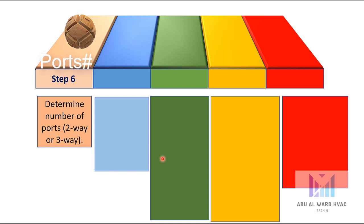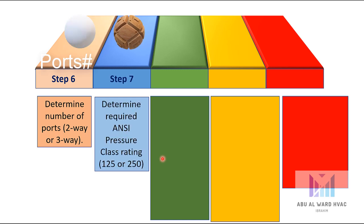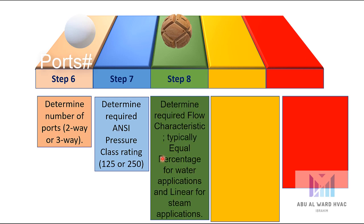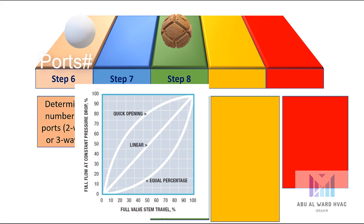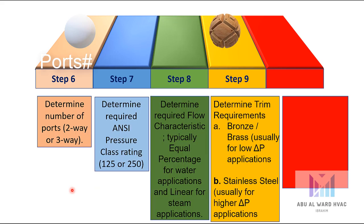Step 6: Determine number of ports — two-way or three-way valve. Step 7: Determine required NC pressure class rating, 125 or 250. Step 8: Determine required flow characteristic — typically equal percentage for water applications and linear for steam applications. Step 9: Determine trim requirement — bronze or brass, usually for low ΔP applications, or stainless steel, usually for higher ΔP applications.